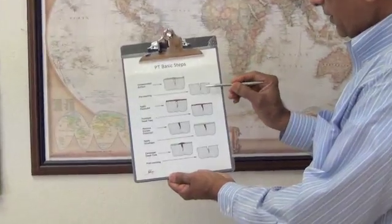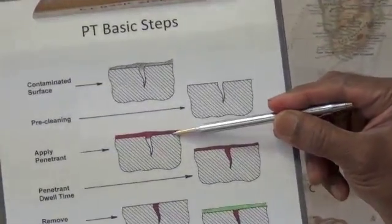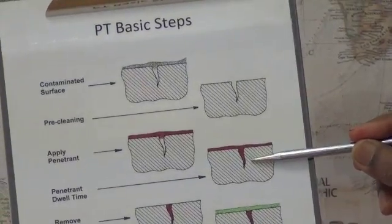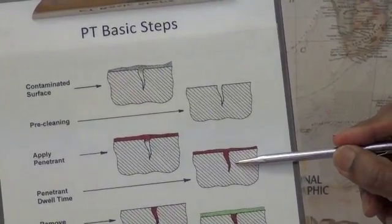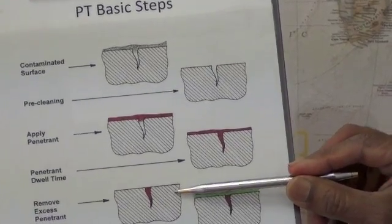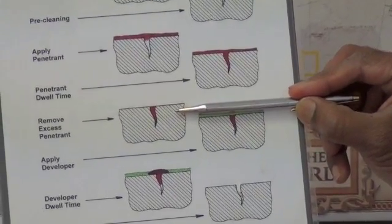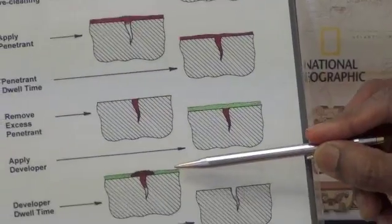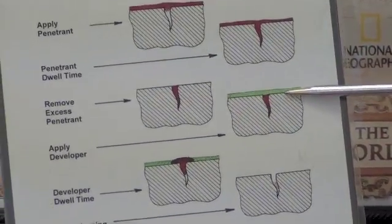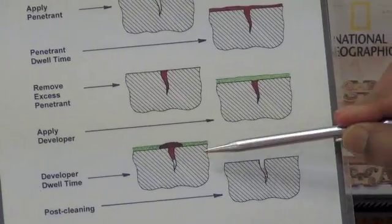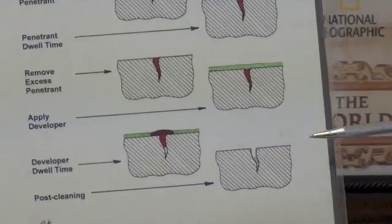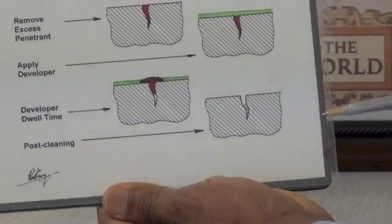In summary, the basic steps of liquid penetrant testing are shown in this diagram: cleaning; applying the penetrant; penetrant dwell time of about 5 to 10 minutes; removing excess penetrant using one of the four methods — water washable, emulsifier, or solvent removable; applying the developer; and after the developer dwell time, performing the examination for detection of indications.